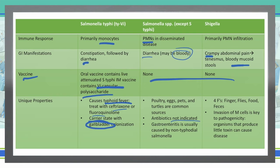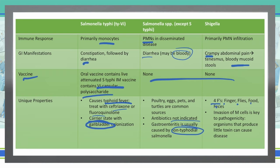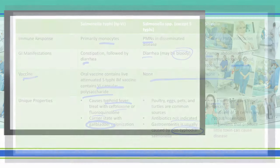If we have a patient with gastroenteritis, that's often going to be one of those non-typhi Salmonella bacteria. Shigella follows the four F's: finger, flies, food, and feces — the most common causes of transmission. It is important to note that the invasion of the M cells with Shigella is key to its overall pathogenicity, which actually allows a very little dose of toxin to cause the disease.